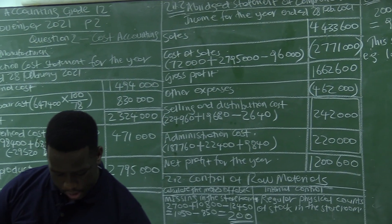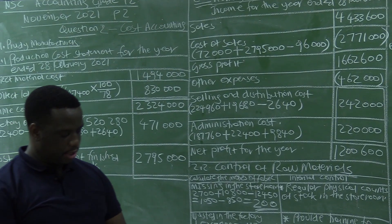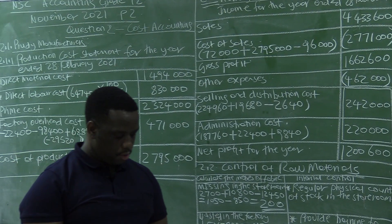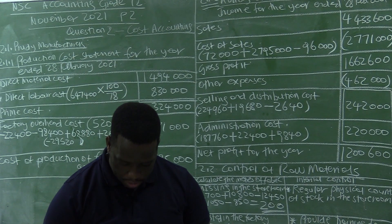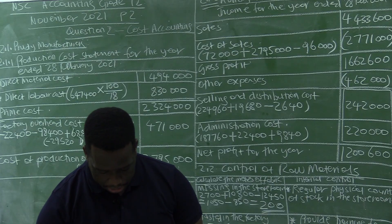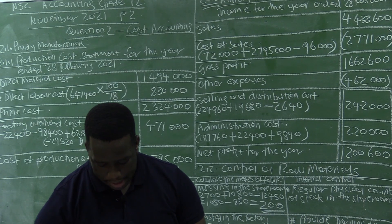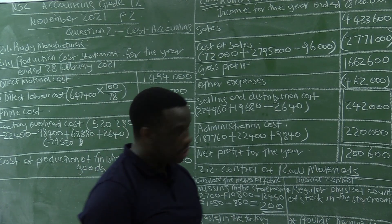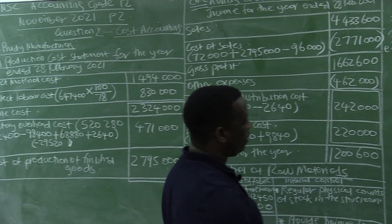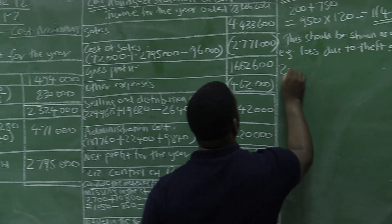This question is divided into many sections. We are now going to the last section, which is 2.3 from the same question.